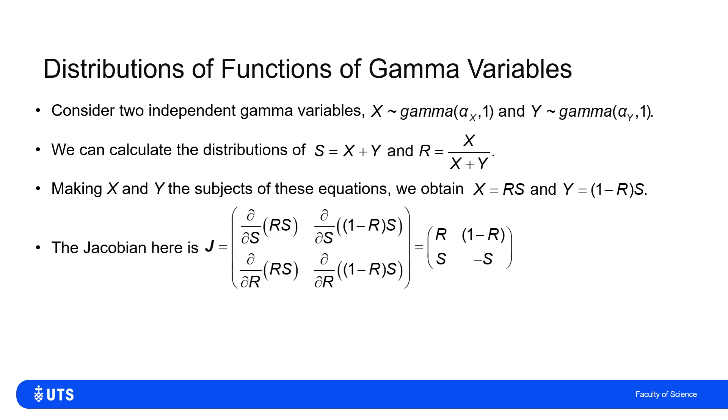So I now need to work out the Jacobian associated with this change of variables. So I work out the rate of change on the top line of X with respect to S and Y with respect to S, and on the bottom line X with respect to R and Y with respect to R. And when I do those, I get that from my Jacobian, the absolute value of its determinant is just S.